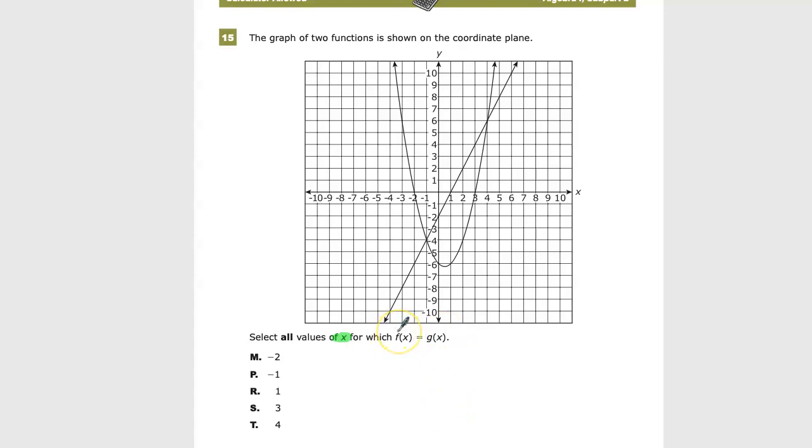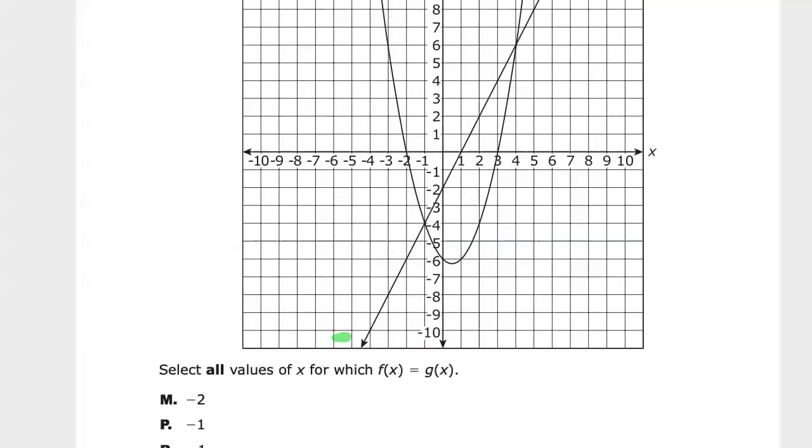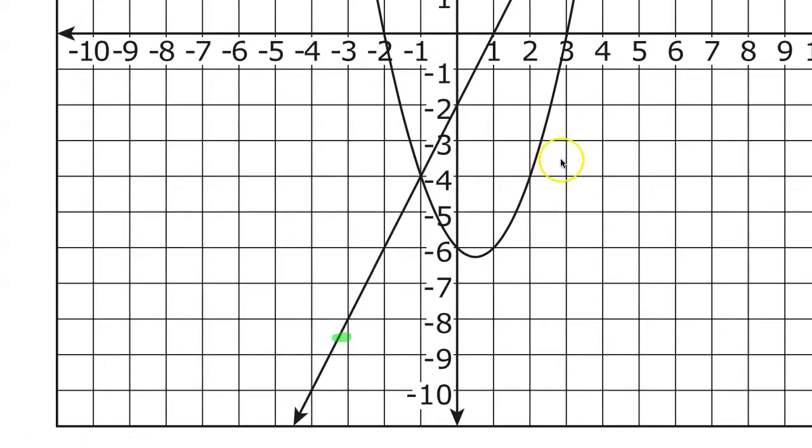So how do we identify a point where they're equal? Well, equality in this sense means that they share the same points, so where they intersect. So we're just looking for places where the two lines, or in this case it's a line and a curve, have the same points. So I'll zoom in just a little bit and write one down.